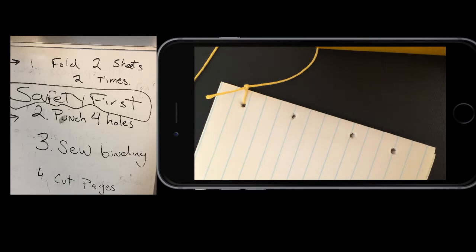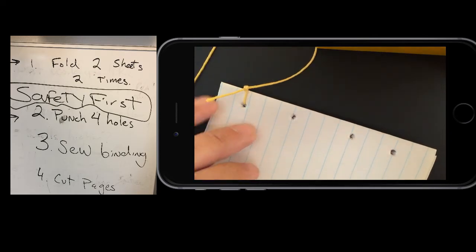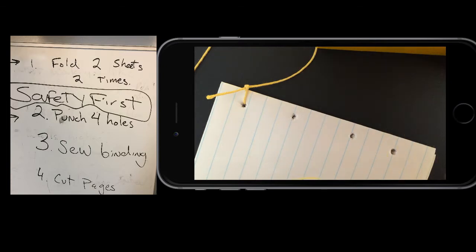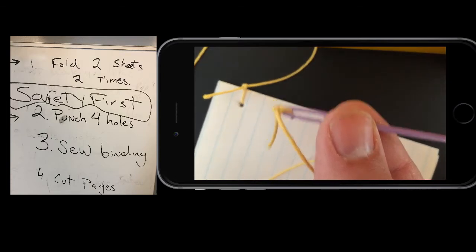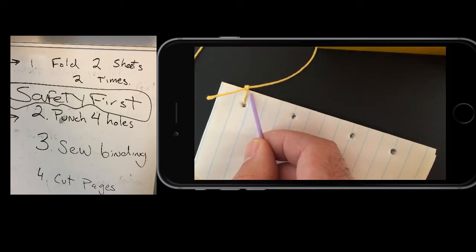So we poked these holes with the golf tee into the foam. I'm using a plastic needle here which is pretty awesome, and I've tied this double knot in the string.